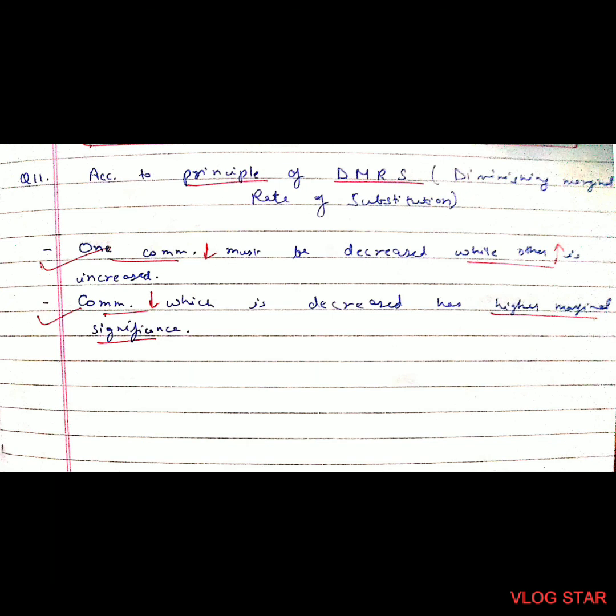Last question: According to the principle of DMRS (Diminishing Marginal Rate of Substitution), two statements are correct. According to diminishing marginal rate of substitution, one commodity must be decreased while the other is increased, and the commodity which is decreased should have the higher marginal significance. Thank you so much.